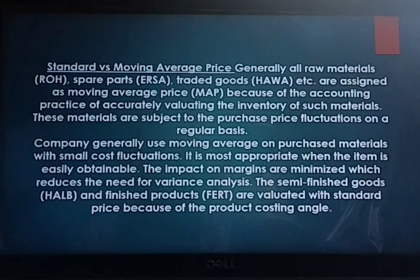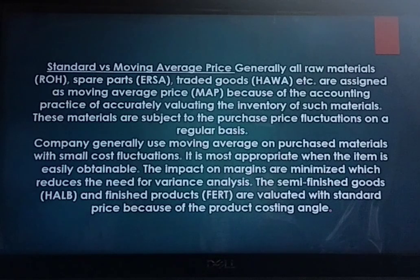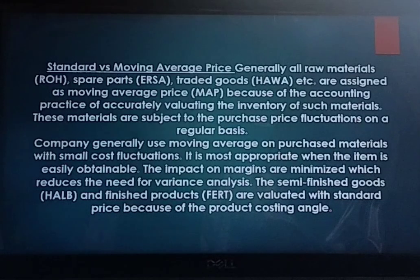Hence, it is generally recommended that moving average price should be followed for raw materials (ROH), spare parts (ERSA), and traded goods (HAWA). Semi-finished goods (HALB) and finished goods are evaluated with the standard price because of the product cost angle. This is the explanation that should be given when you are asked about the differences between standard price and moving average price.